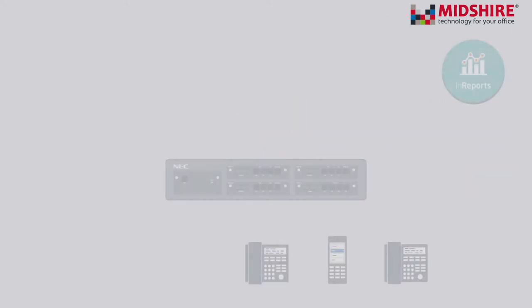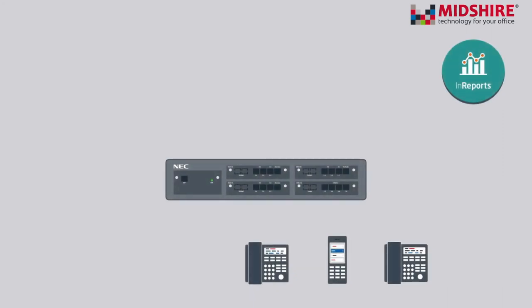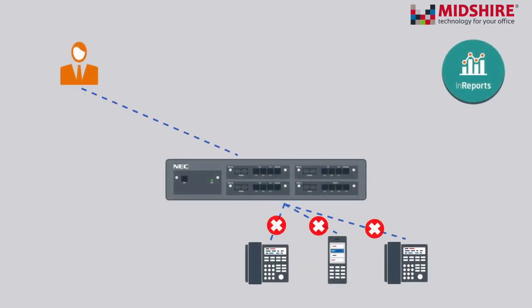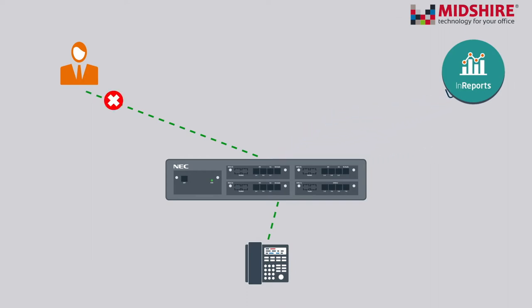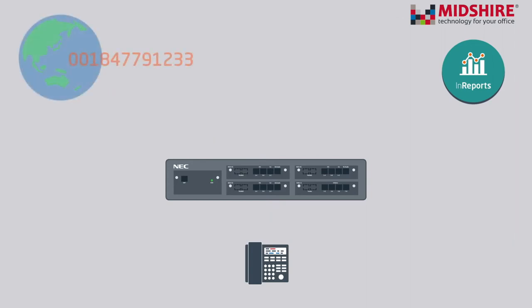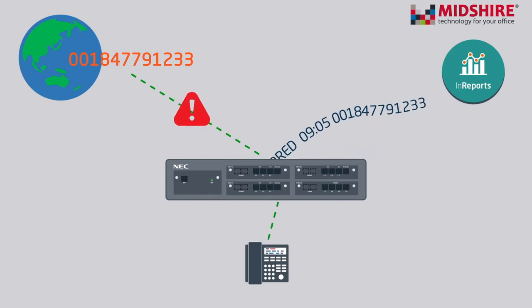Unanswered calls are also reported. Any incoming unanswered call is a call that arrived at the telephone system and wasn't answered by an extension of any kind. An outgoing unanswered call is a call to a destination that just rings out and isn't answered by the far party. Calls made to numbers that are restricted from being dialed are also reported — these are called barred calls.